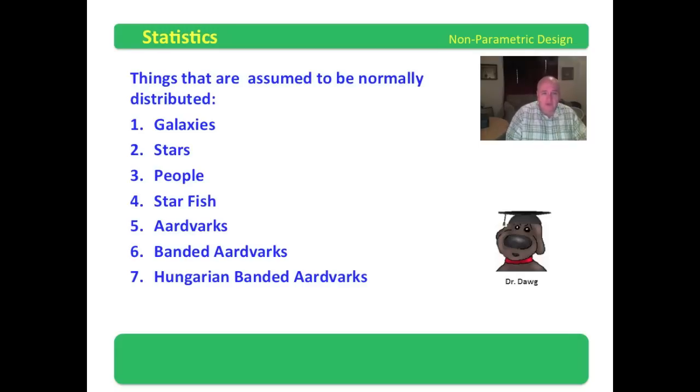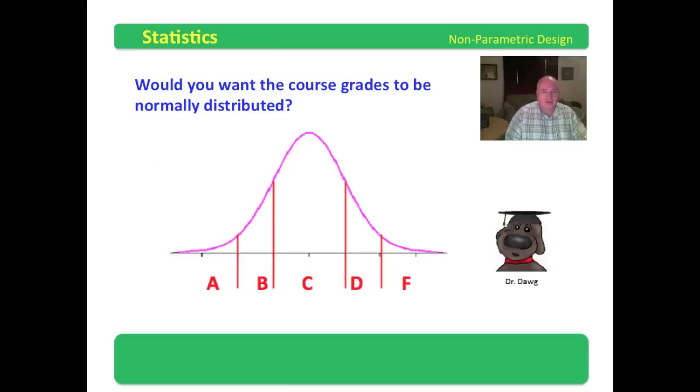Those of you that took me in the first quantitative class understand what I'm doing there, that I have a fascination with the albino Hungarian banded aardvarks that has infested Texas. Pretty interesting. There they are, the albino Hungarian banded aardvarks. A lot of normal distribution sets included with those little creatures.